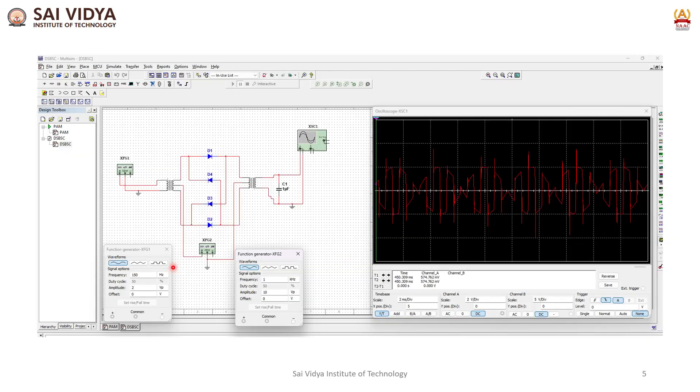This is the multi-simulation output to understand the working of the circuit. The message signal is maintained at 150 Hz and the carrier may be in sinusoidal form or square form. Here we have considered the frequency of operation of the carrier is 1 kHz and the output waveform is as shown.